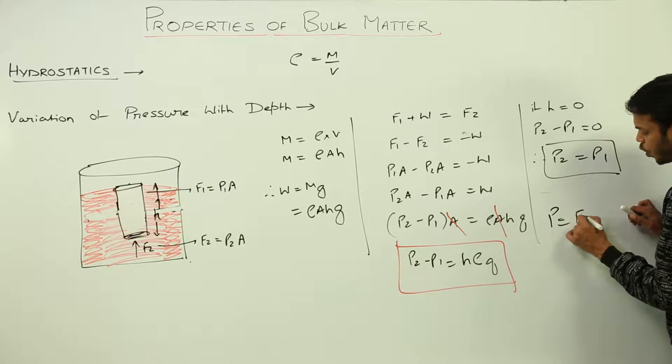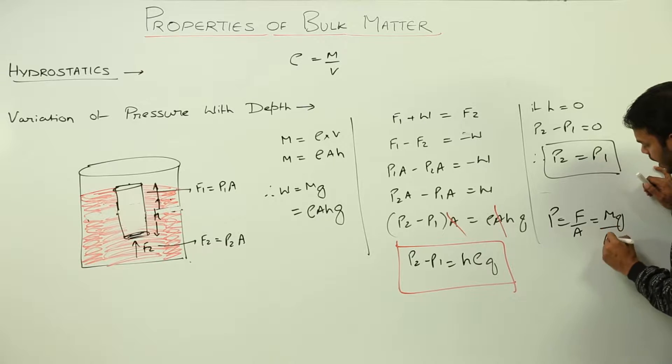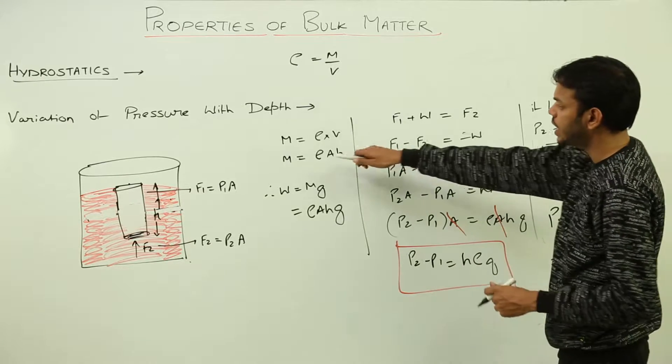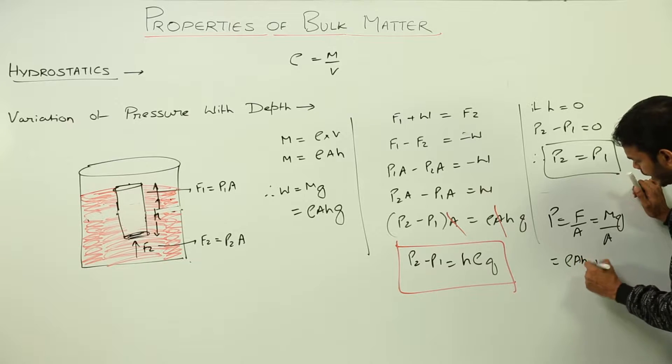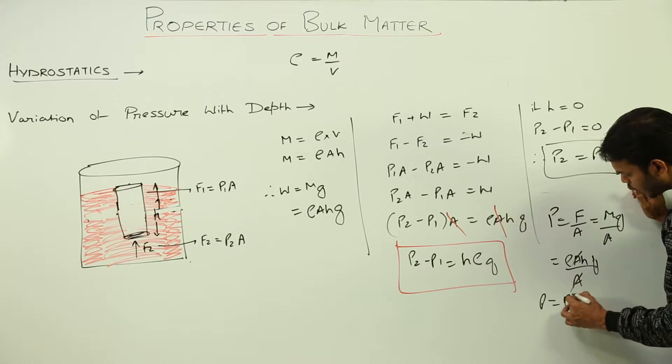Pressure is what? Force per unit area. Force is mass into gravity upon area. What is mass? Volume into density, right? Rho A h into g upon A. So A cancels out and we get pressure is rho h g or h rho g.